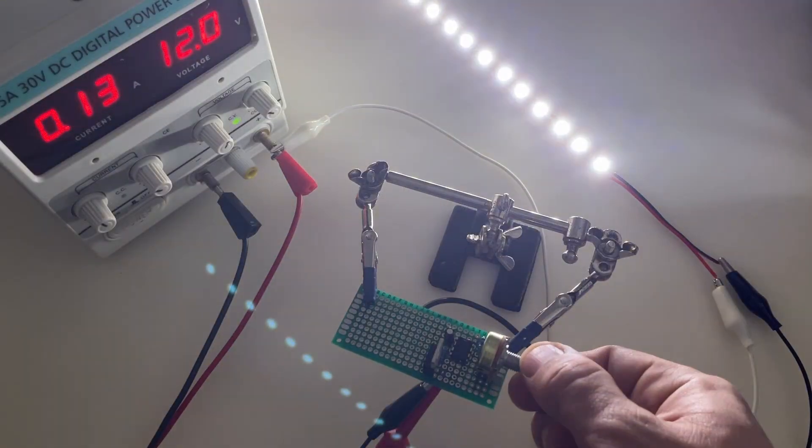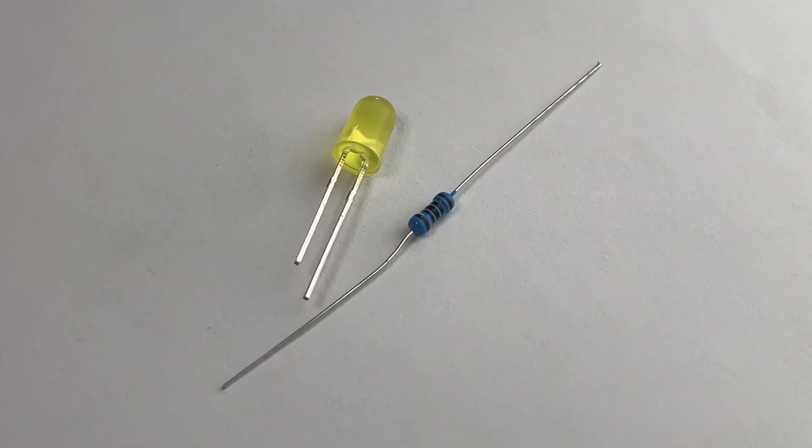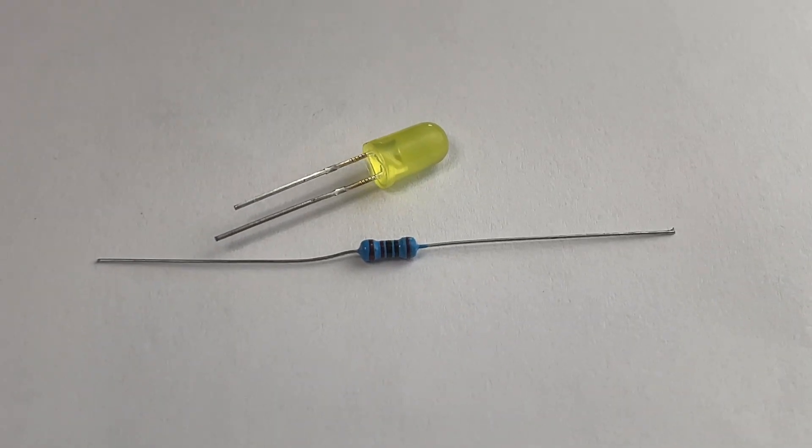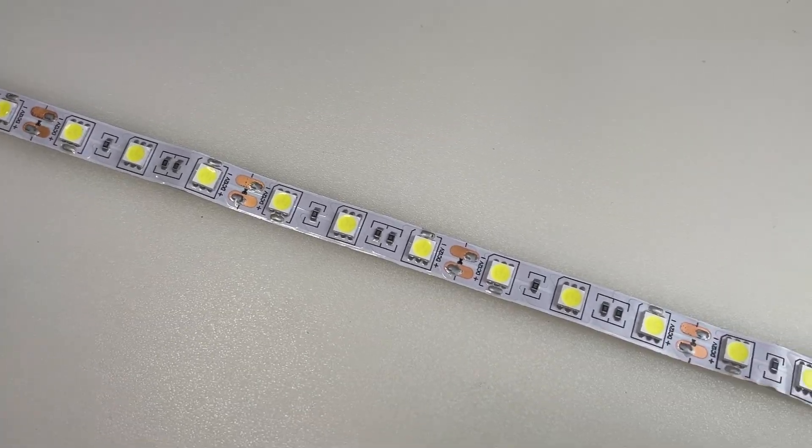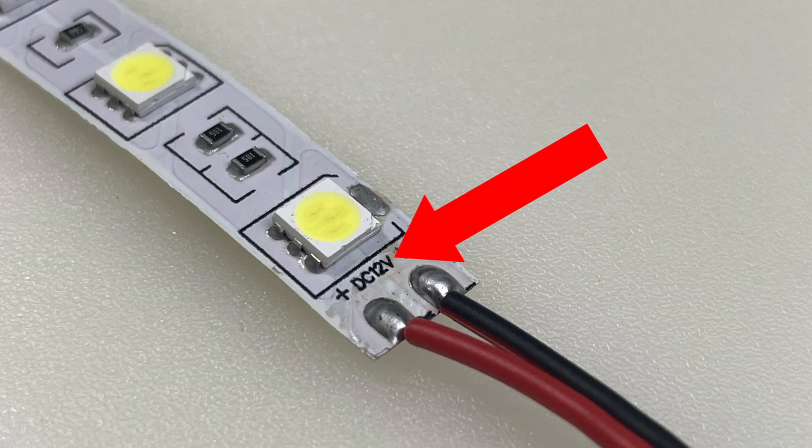Finally, you'll need whatever you would like to use for your output load. If you have a simple through-hole LED, remember to include a series current limiting resistor. Or, if you have an LED strip or a small DC motor, just be sure that it will operate properly according to the supplied voltage.